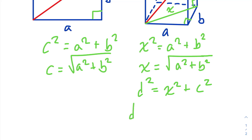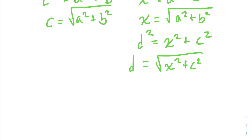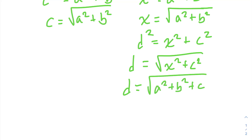And if we take the square root of both sides, we get that D is equal to the square root of X squared plus C squared. But we remember that X squared is equal to A squared plus B squared. So D is equal to the square root of A squared plus B squared plus C squared.